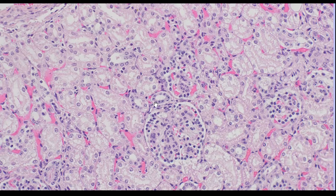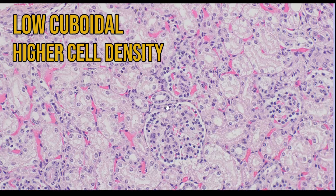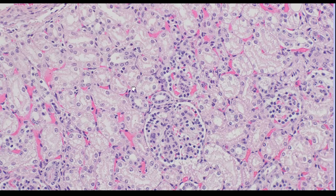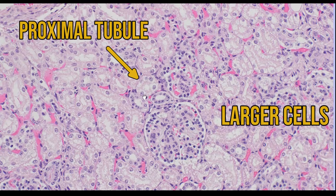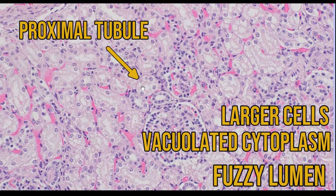We can use this to calibrate the appearance of a distal tubule within our minds. They have quite low cuboidal epithelium, the density of cells is quite high, and the lumen of the tubule is very clear. If you contrast that to the proximal tubule just next to it, the cells are much larger and have quite vacuolated cytoplasm, and the lumen is much smaller and less clear.